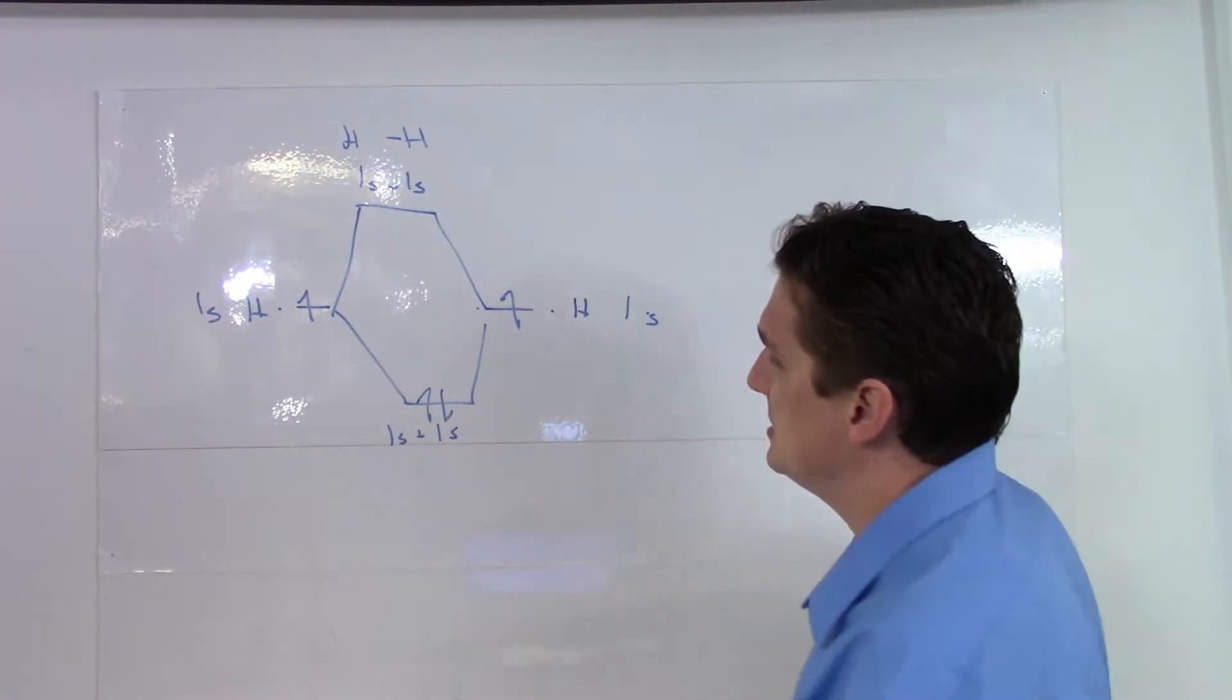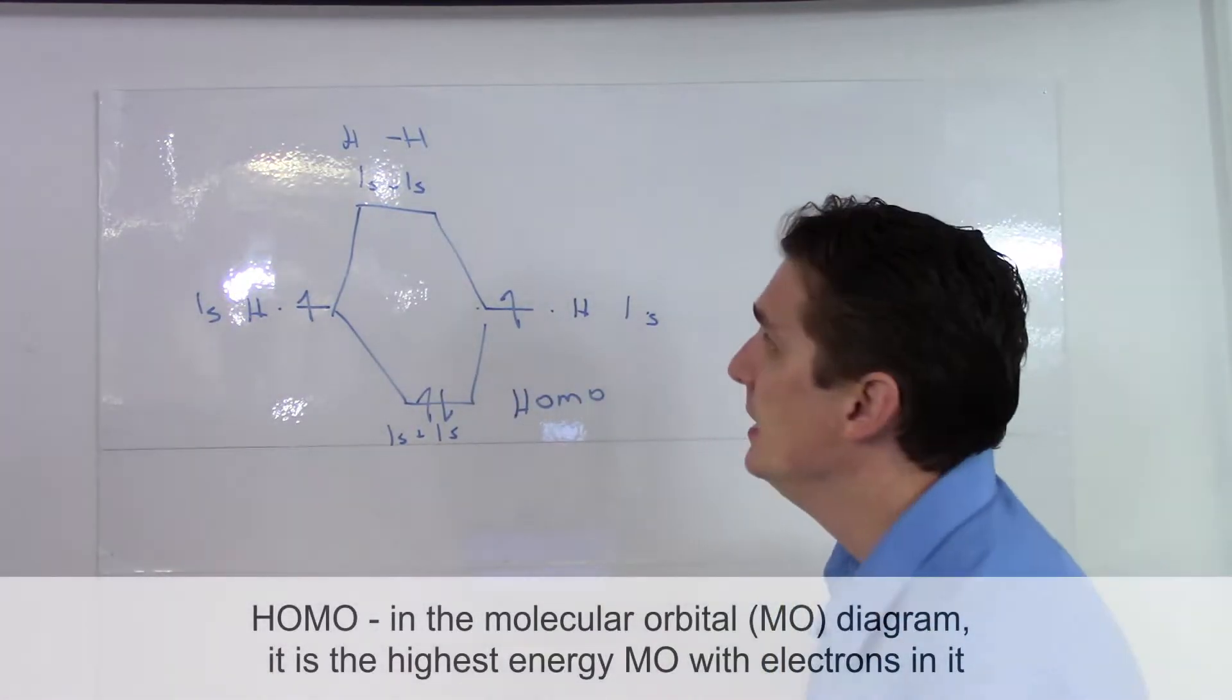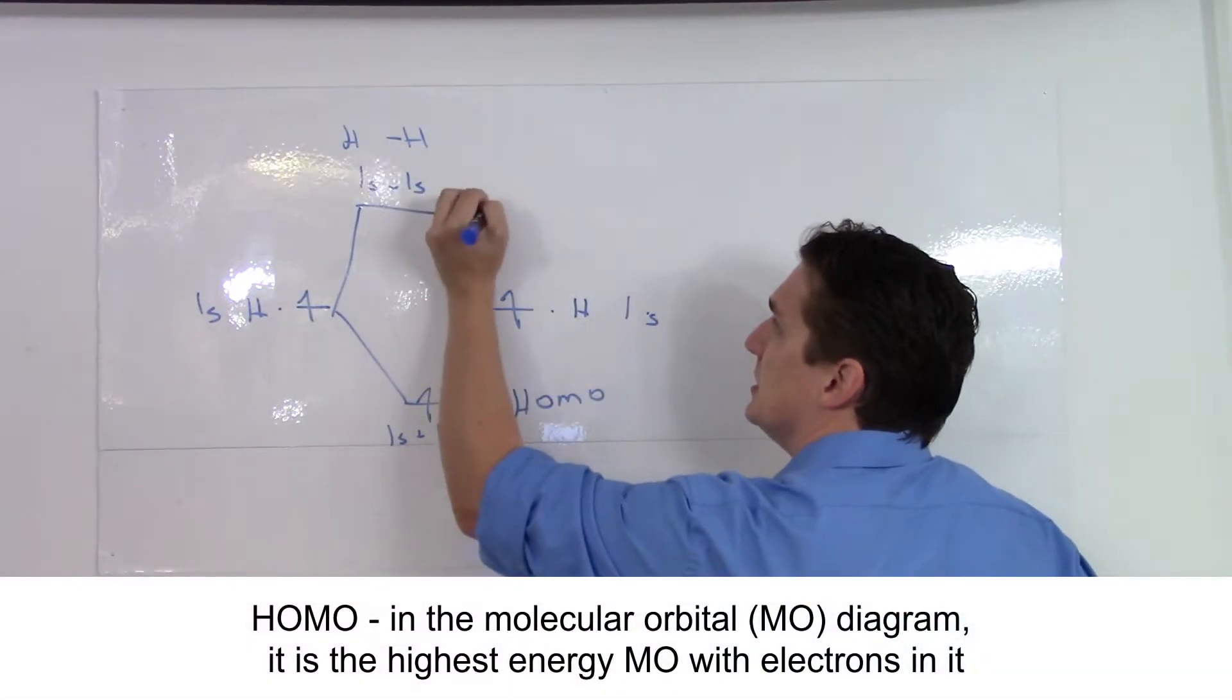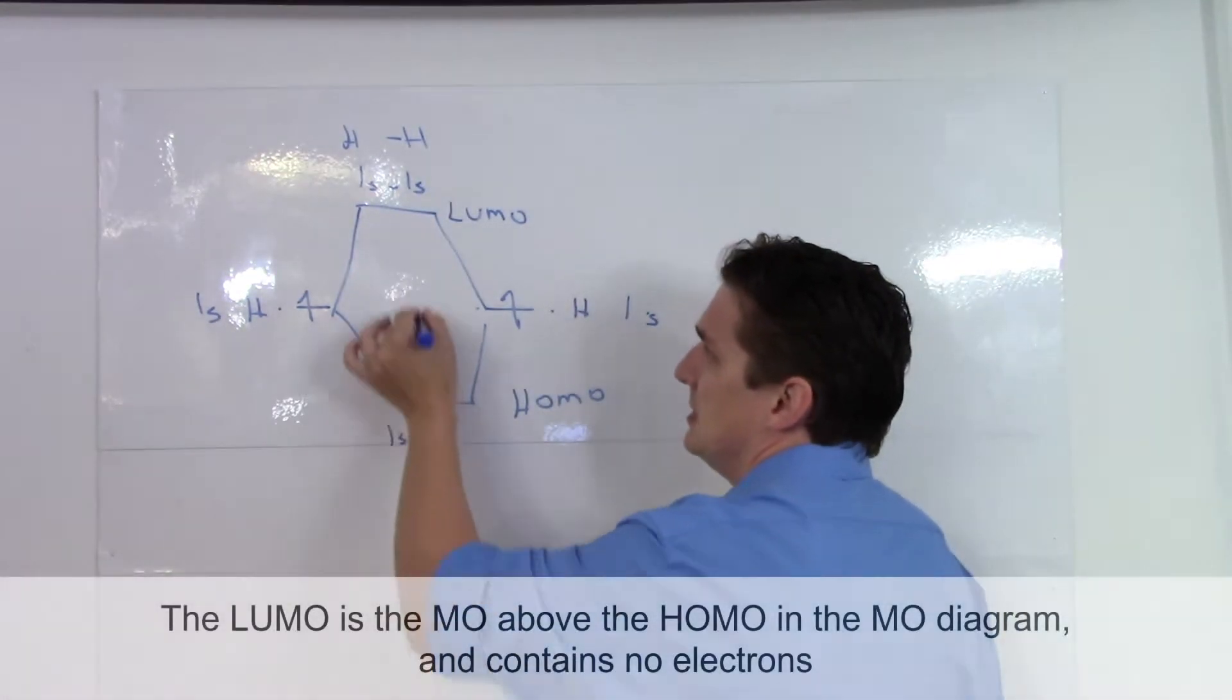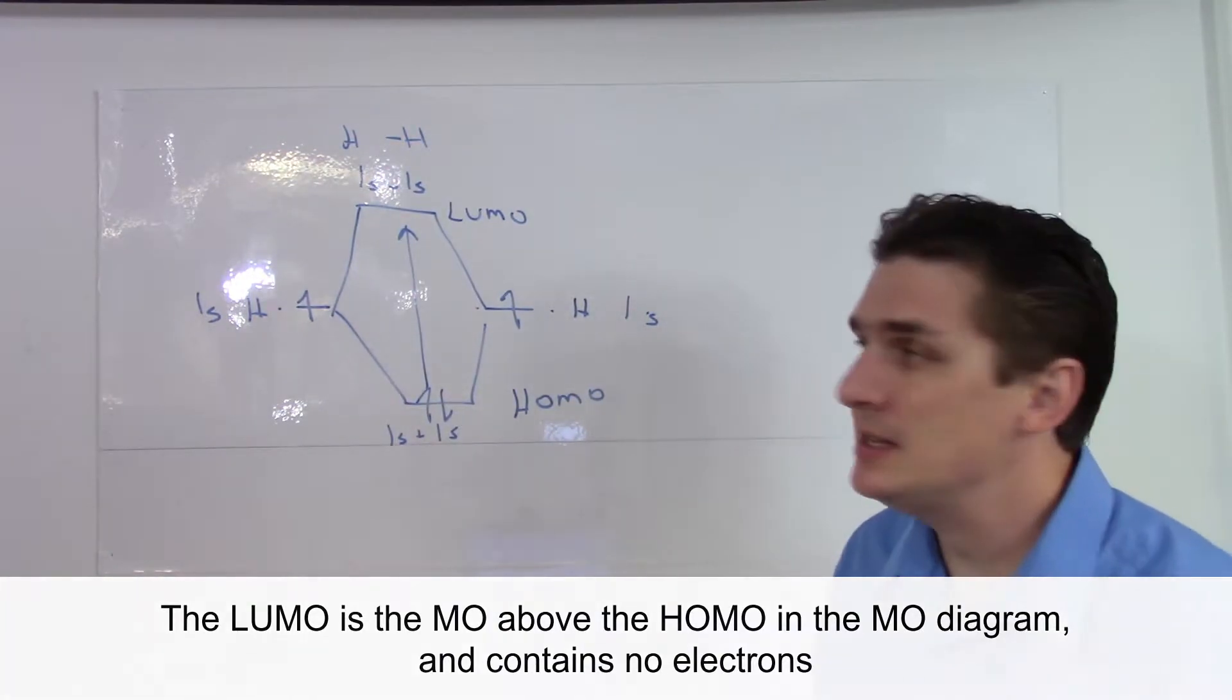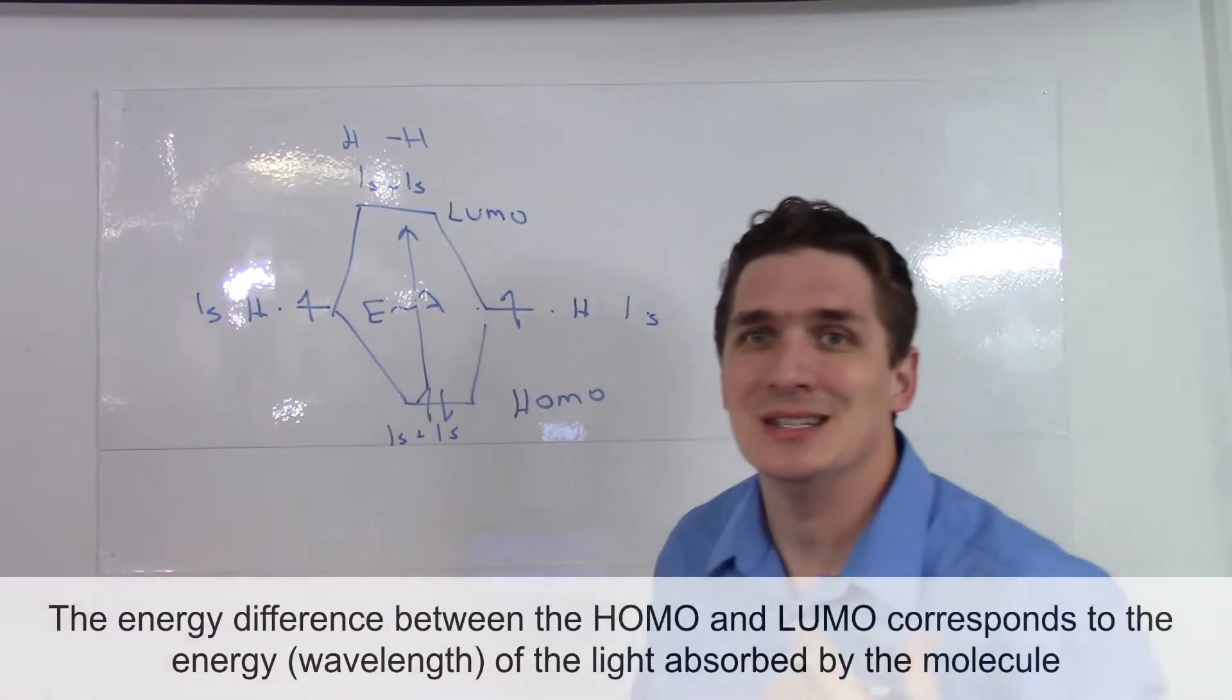So this would be considered the highest occupied molecular orbital, or the HOMO. This would be the lowest unoccupied molecular orbital, or the LUMO. The energy difference between the HOMO and the LUMO here is the wavelength of the light absorbed. So this is going to correspond to the frequency of light.